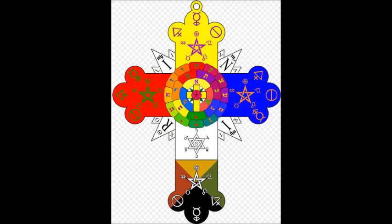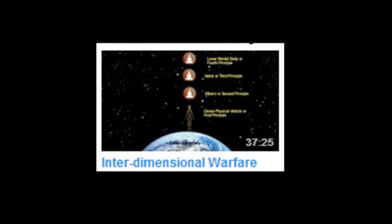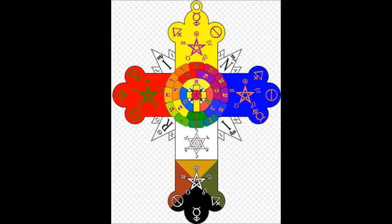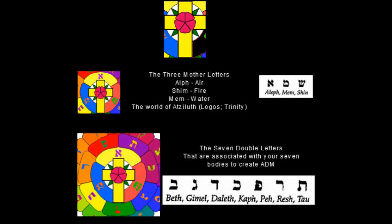Now, relating to interdimensional warfare discussed in a previous video — where I talked about possessions — many Christian churches use a cross. I want to decode this because there are many Hebrew alphabets embedded in it. When you look at the middle of this diagram, you see a cross. Expanding outward from that cross, you can see the three mother letters — Aleph, Shin, and Mem, representing air, fire, and water — associated with the upper world of Atziluth, the world of ideas and trinities.